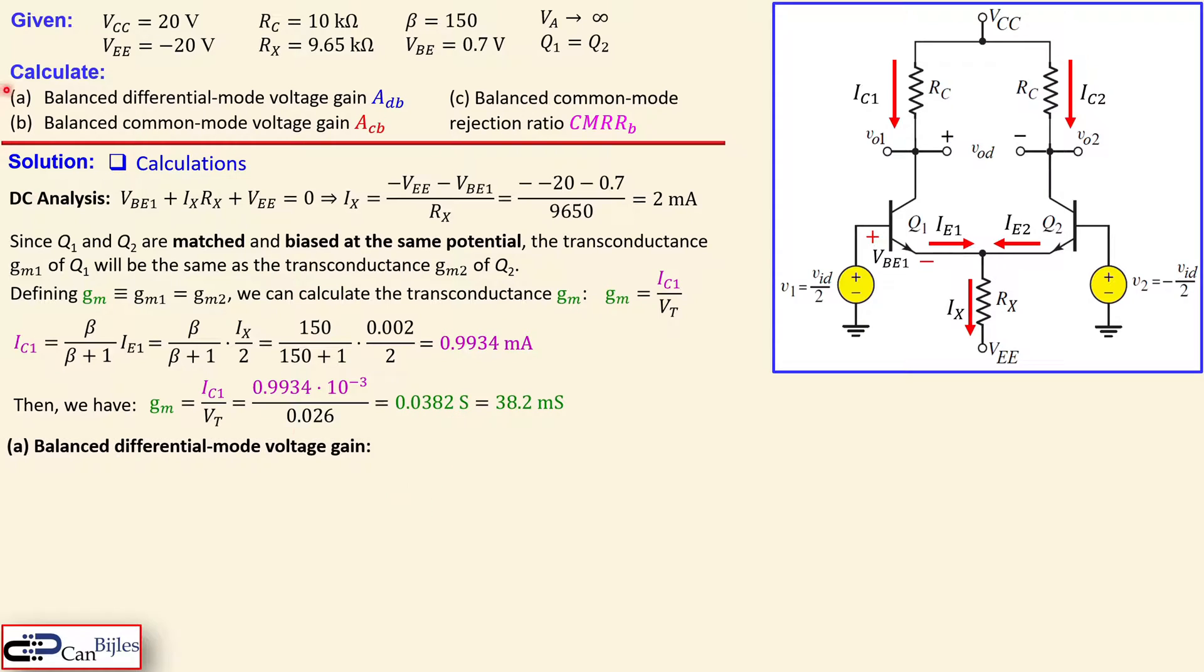Now we can go to the first question: balanced differential mode voltage gain. That is given by VOD over VID, the difference between these two nodes over the voltage applied between these two nodes. That's minus GM because of the sign inversion. When you measure between these two nodes, you get the inverse. So what you have is just substitute the values. And in this case, because there's no early voltage, we only have RC as our load resistor. And we have now minus 382 as the voltage gain for the balanced differential mode.